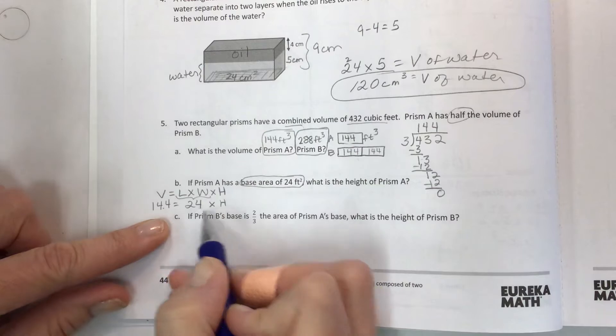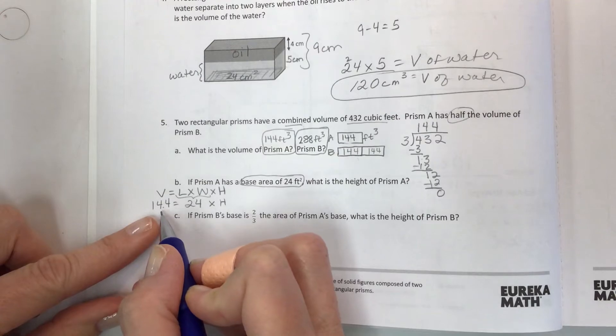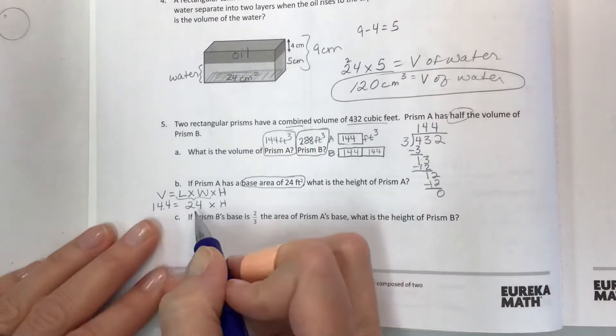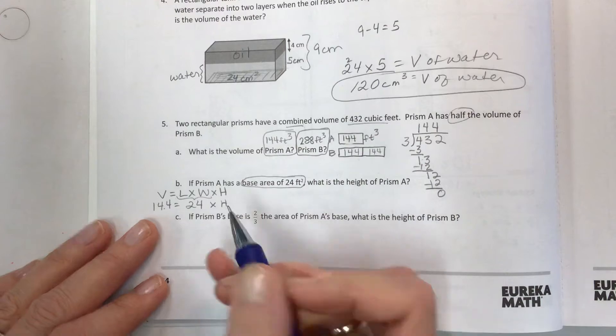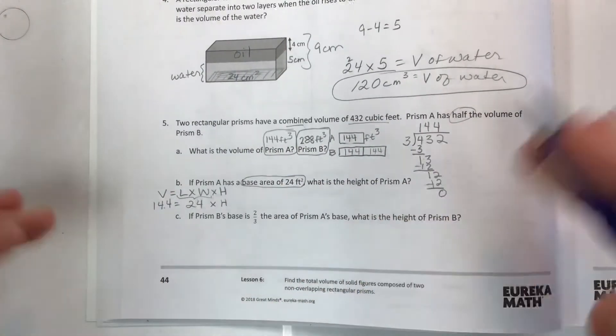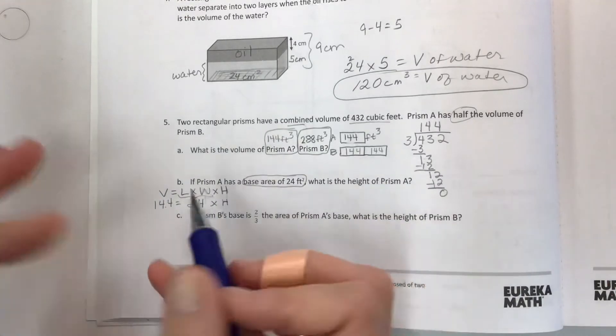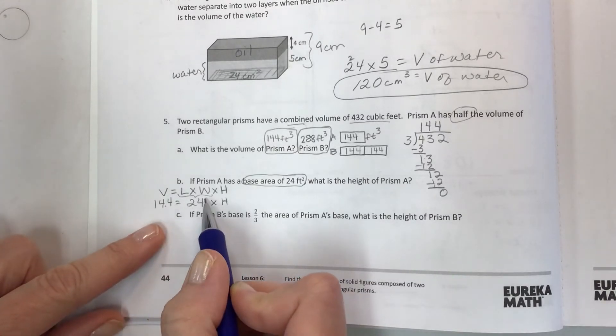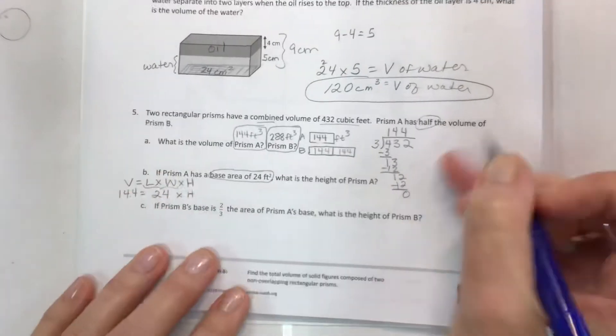So for prism A the volume is 144. What we have to do here is to solve by saying 24 times what would give us 144, and the strategy is to divide when you don't have the other factor. You have to find the missing factor. We're going to divide 144 by 24 and we can do that over here where we have a little bit extra space.